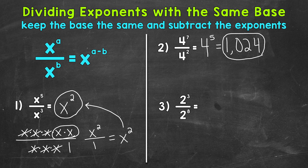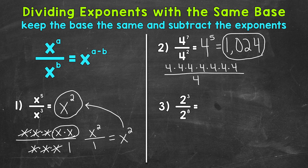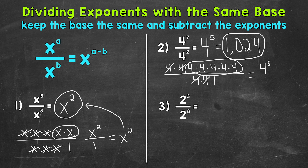Let's break it down and see exactly how we got 4 to the 5th power. So 4 to the 7th power is 4 times 4 times 4 times 4 times 4 times 4 times 4, and that's divided by 4 squared, so 4 times 4. We can cancel out 4s since 4 divided by 4 equals 1. We're left with a 1 down below and 5 fours up top, which is 4 to the 5th power over 1 — just 4 to the 5th power. That matches our answer when we kept the base the same and subtracted the exponents.